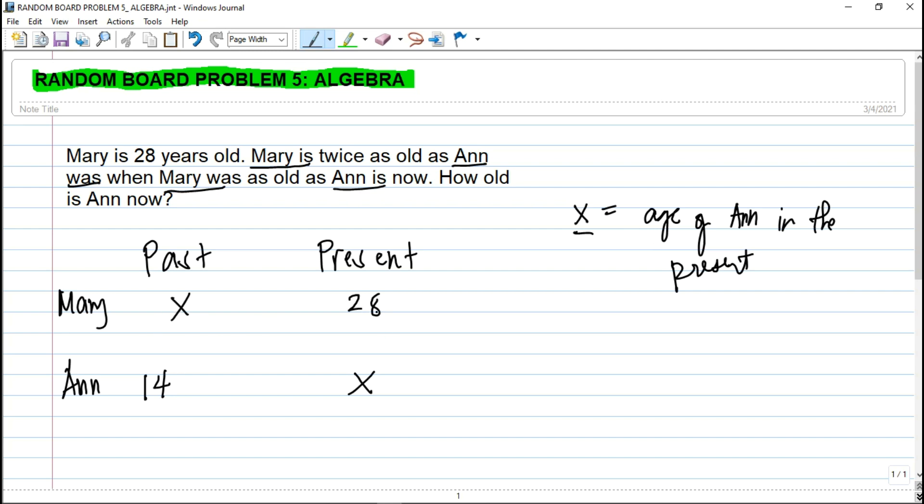So here guys, just equate the time interval. So 28 minus x, the time interval in Mary's age should be equal to the time interval in Ann's age, so that is x minus 14.